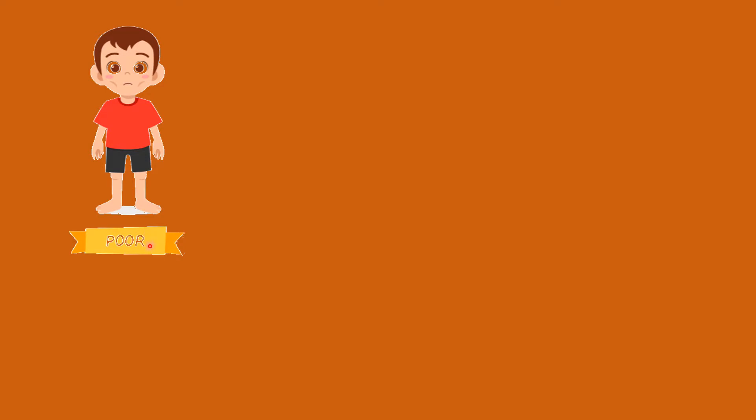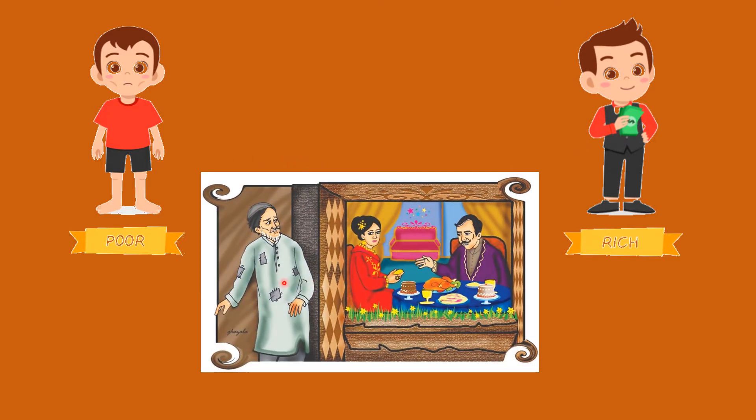Poor. Rich. The opposite of poor is rich. This boy is poor. He has not much money. And this boy is rich. He has a lot of money. This picture also tells you that this man here, he is poor. And these two people here, he is rich.